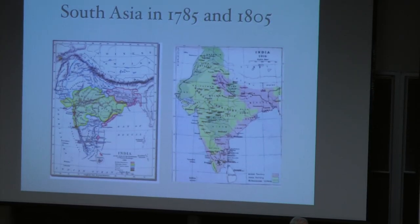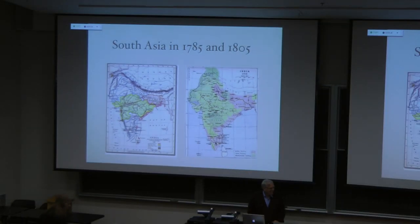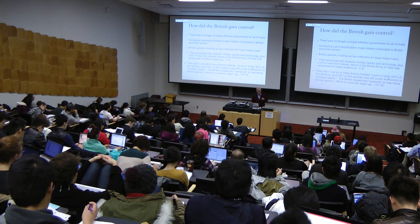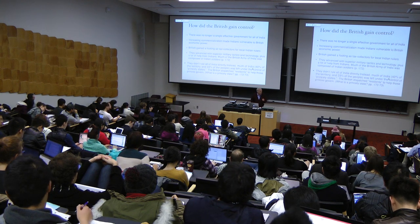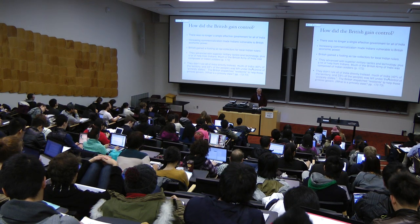The first semester we go from the Stone Age to around 1500, and then in Term 2, Asia 101, we do from around 1500 — which is when Westerners start showing up and establishing a permanent presence in parts of Asia — from 1500 to the present day, all the way to the 21st century.